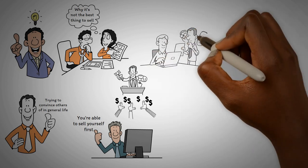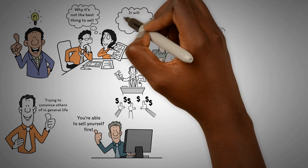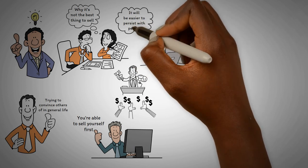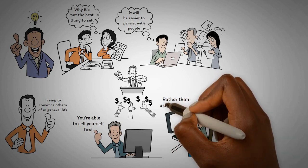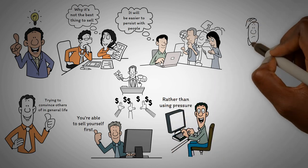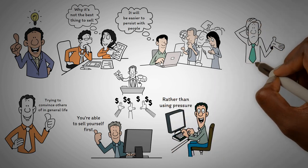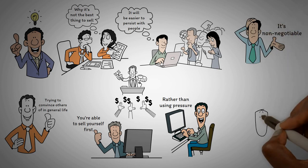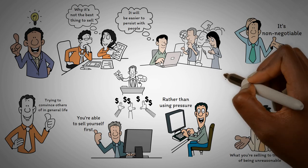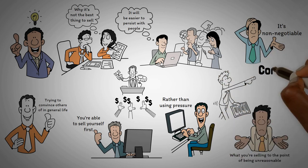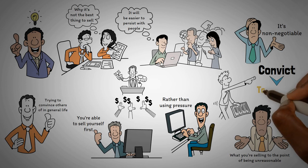Your level of conviction determines your ability to sell to others. If you're completely sold on your product or service, it will be easier to persist with people because you'll come from a positive and passionate place rather than using pressure. This point is crucial for achieving greatness, and it's non-negotiable. You have to strongly believe in what you're selling to the point of being unreasonable. Conviction means firmly holding a belief, and it comes from the Latin word convict, meaning to conquer.